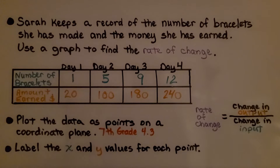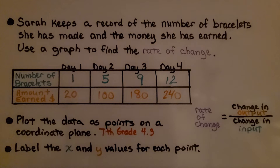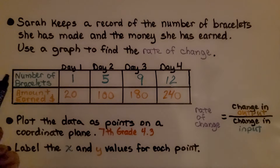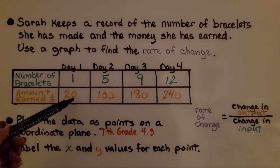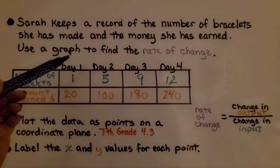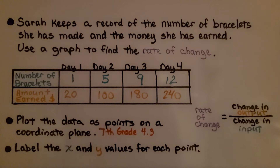Sarah keeps a record of the number of bracelets she's made and the money she's earned. Use a graph to find the rate of change. We used this table from the last video. We've got the number of bracelets, the amount she earned, for days 1, 2, 3, and 4.